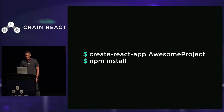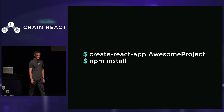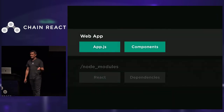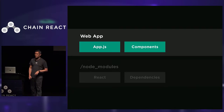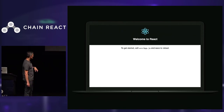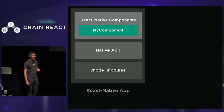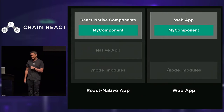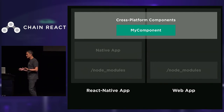Now let's compare that with what happens when you create a new React.js web app. You run create-react-app, run npm install, and again you have your node_modules folder with your React module. Instead of a native app on top, you have the bones of a web app — where all your platform-specific web components will live. Fire up the server, open the browser, and your app is running. When we compare the architecture of our React Native app with our React.js web app, we see that at the application layer we have two different sets of implementations, and it's our first impulse to want to merge them into a single cross-platform module.